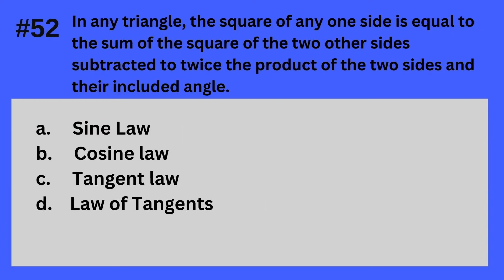Question 52. In any triangle, the square of any one side is equal to the sum of the squares of the two other sides subtracted by twice the product of the two sides and their included angle. A. Sine Law, B. Cosine Law, C. Tangent Law, D. Law of Tangents. The answer is B — Cosine Law.